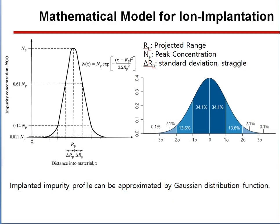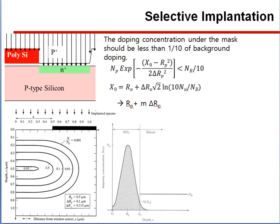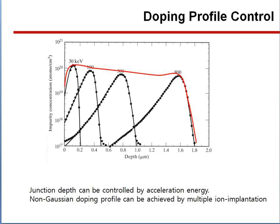The implanted impurity profile can be approximated by a Gaussian distribution function. The doping concentration under the mask should be less than 1/10 of background doping. Junction depth can be controlled by acceleration energy. Non-Gaussian doping profile can be achieved by multiple ion implantation.